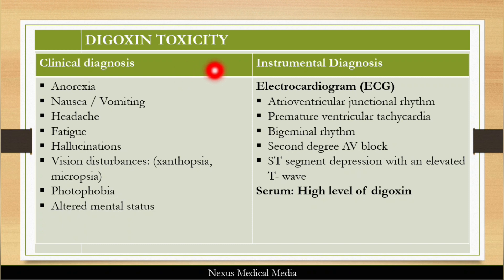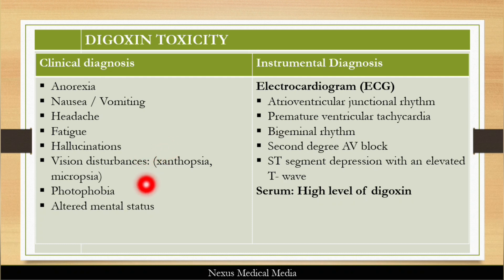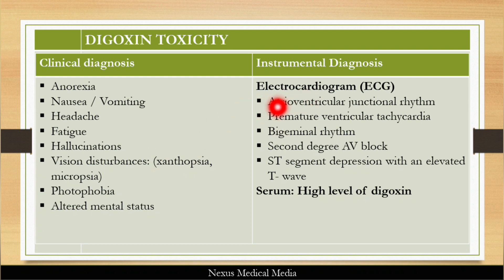Diagnosis of digoxin toxicity is mainly clinical. Clinical features include anorexia, nausea and vomiting, headaches, fatigue, hallucinations, vision disturbances, photophobia, and altered mental status. On ECG you can see atrioventricular junctional rhythm, premature ventricular tachycardia, bigeminal rhythms, and second-degree AV block. In serum, you can find a high level of digoxin.